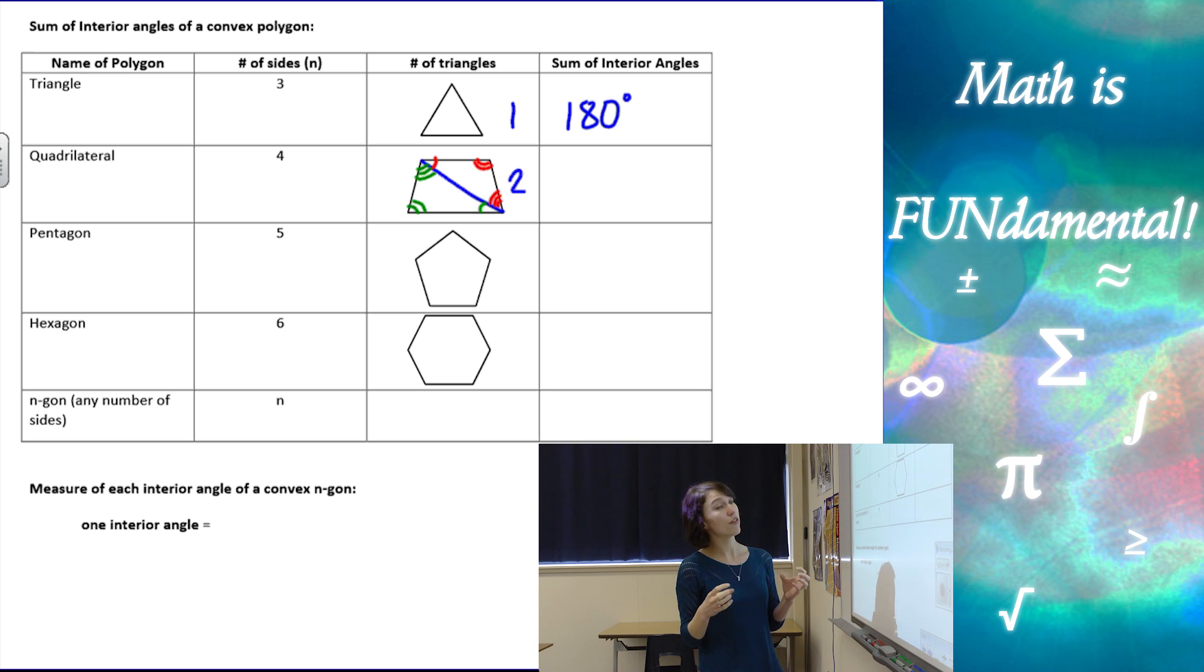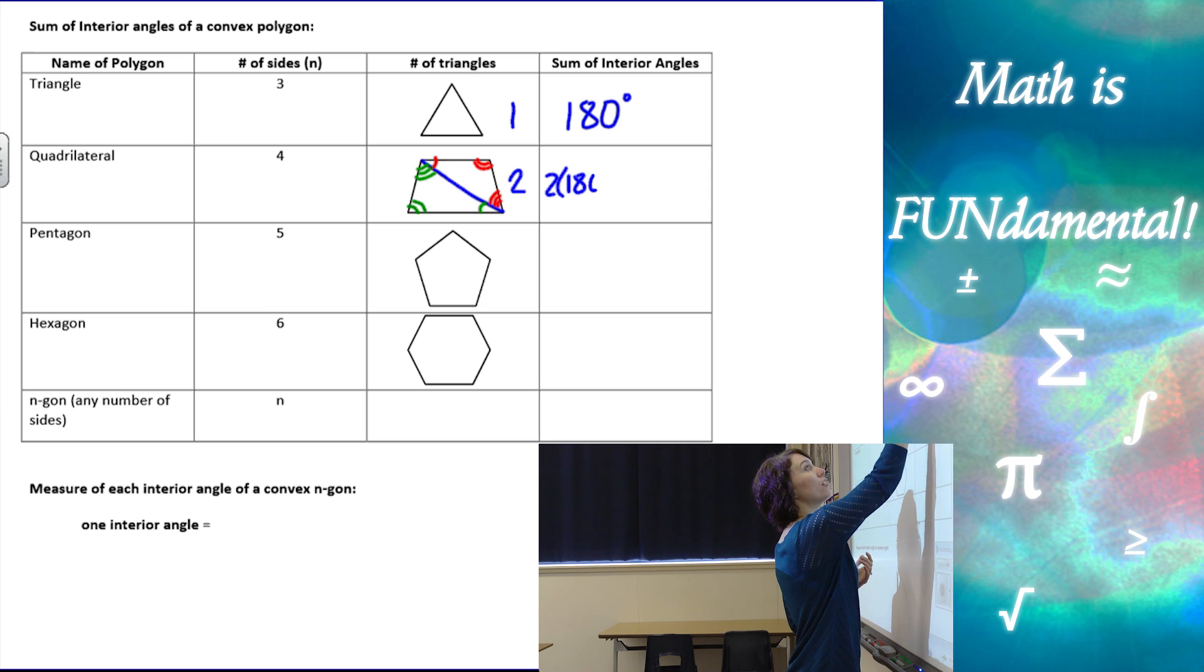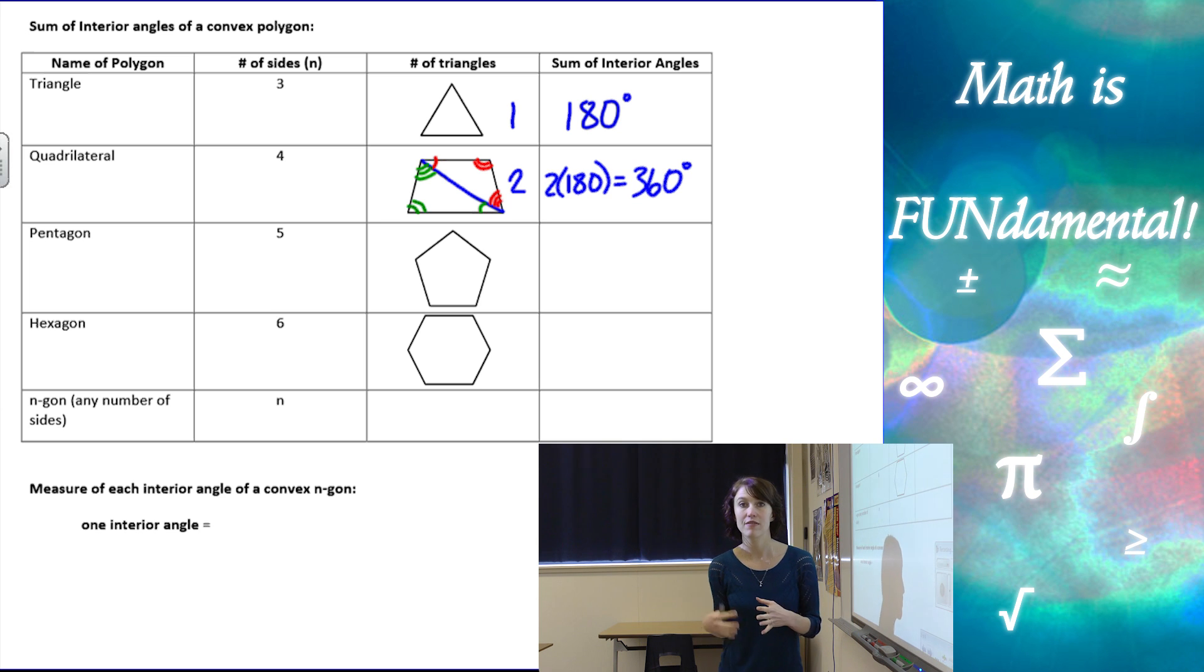All those red and green markings make up the interior angles of the quadrilateral. So with the two triangles, we can take two and multiply it by 180, and we know that the interior angle measurements of any quadrilateral is going to be 360 degrees when you add all those angles together.